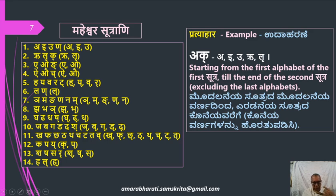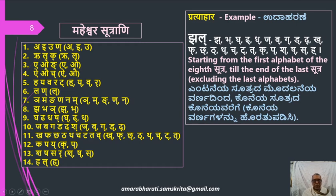We will see one more example: Jal. Starting from the first alphabet of the eighth sutra, J, till the end of the last sutra, L, excluding the marker letters. So this is the Jal Pratyahara.